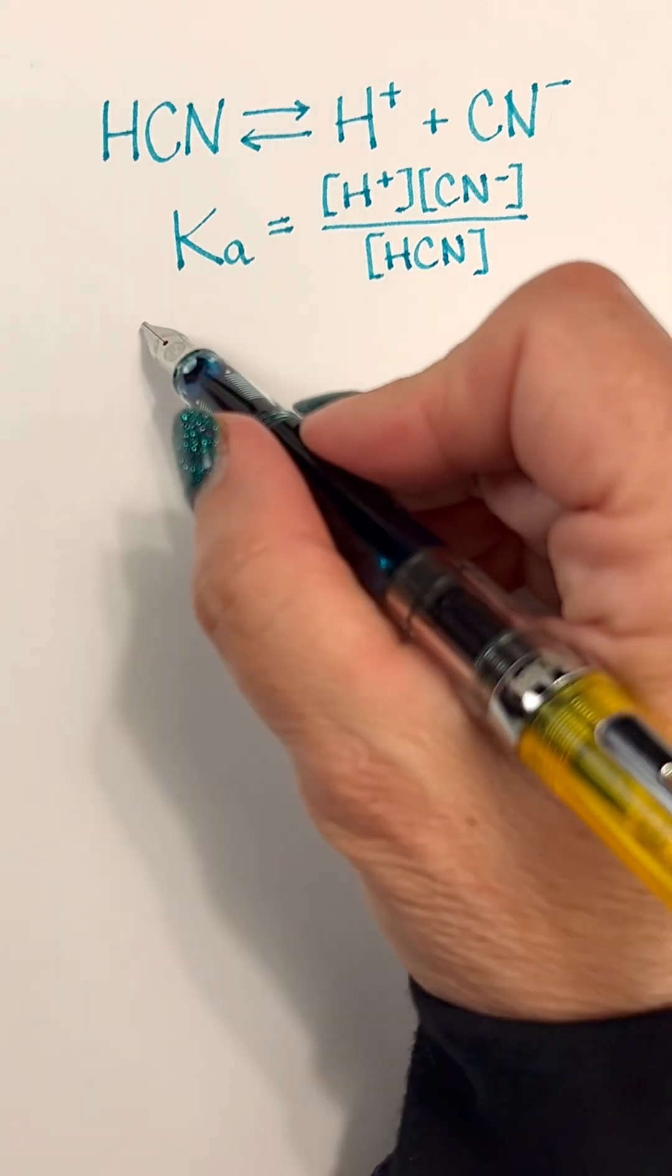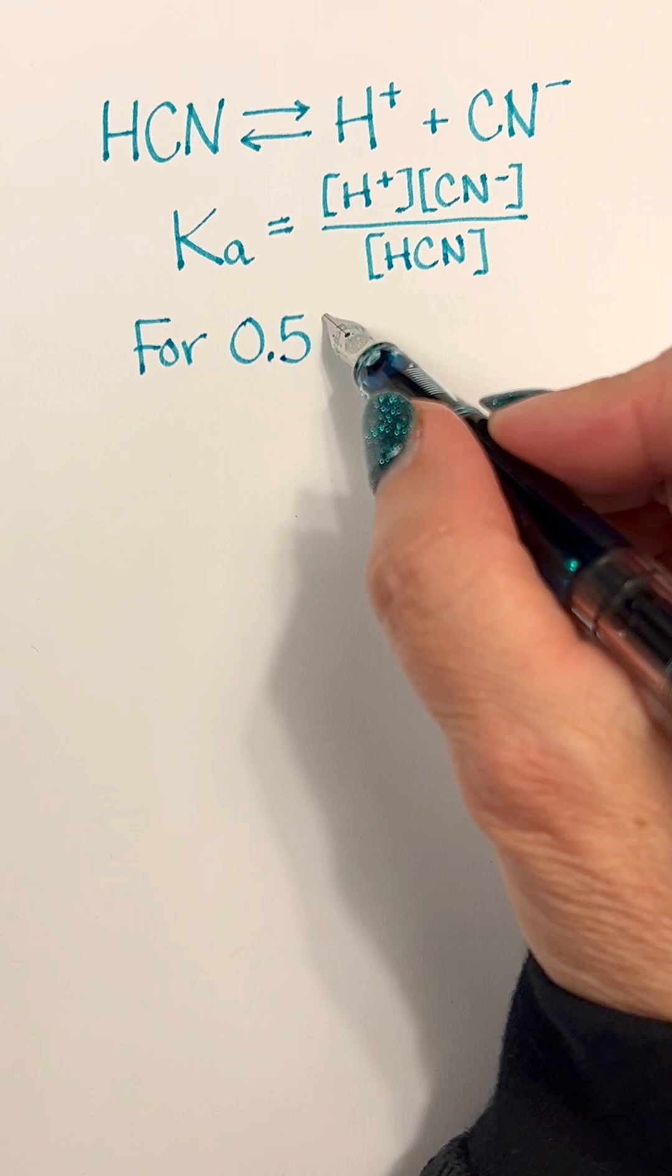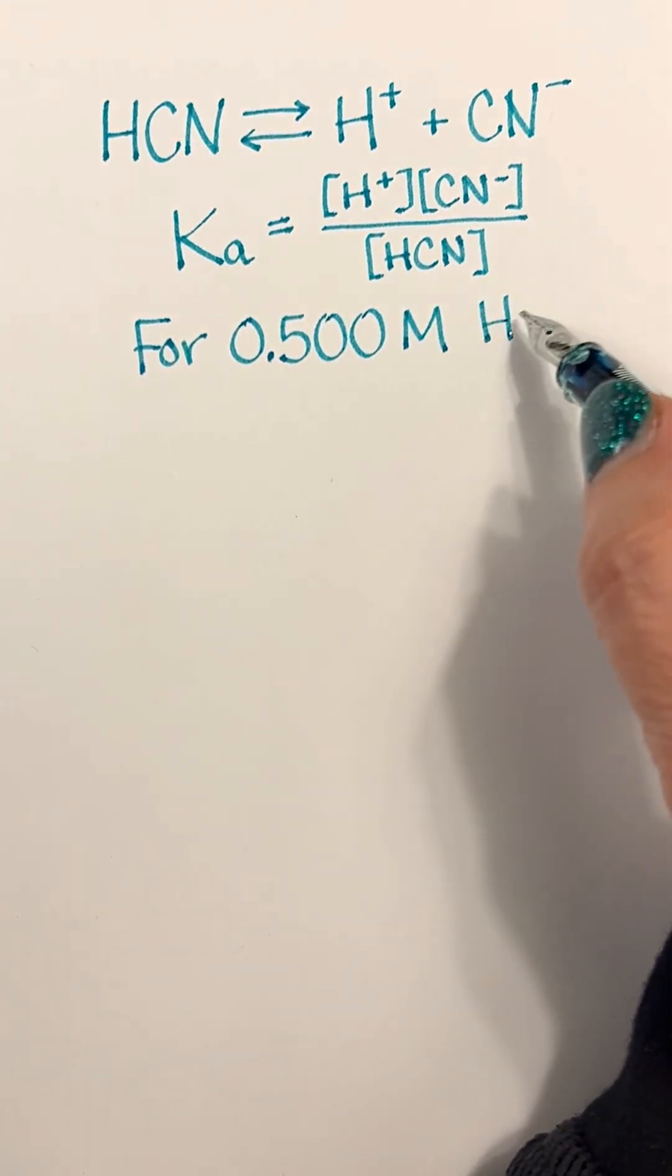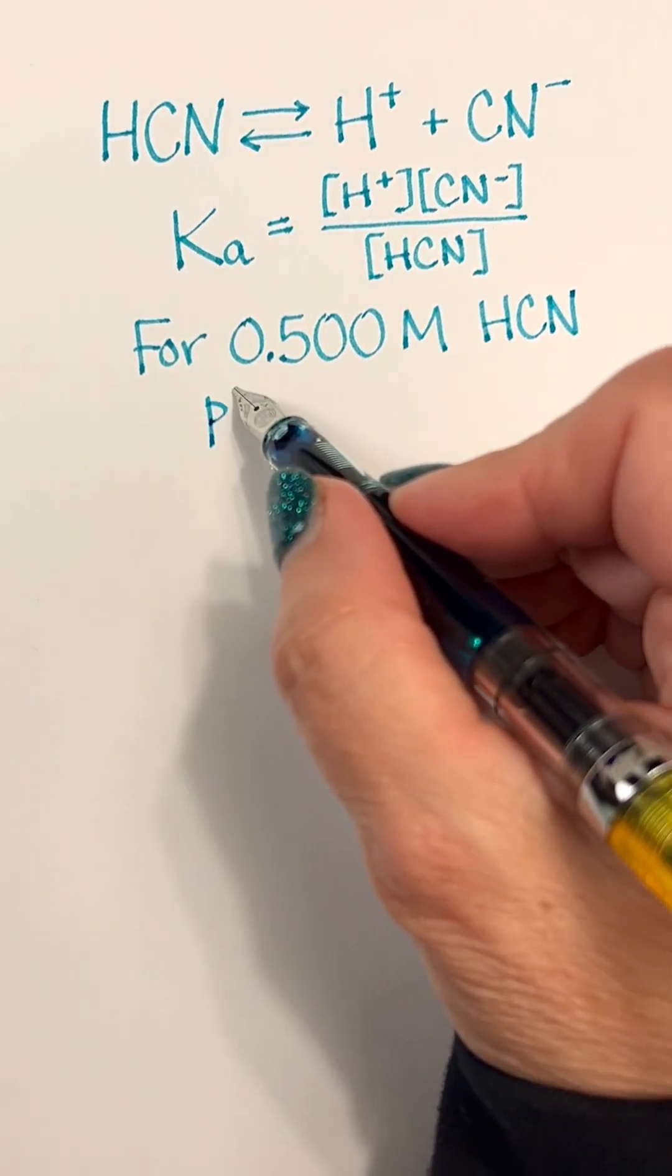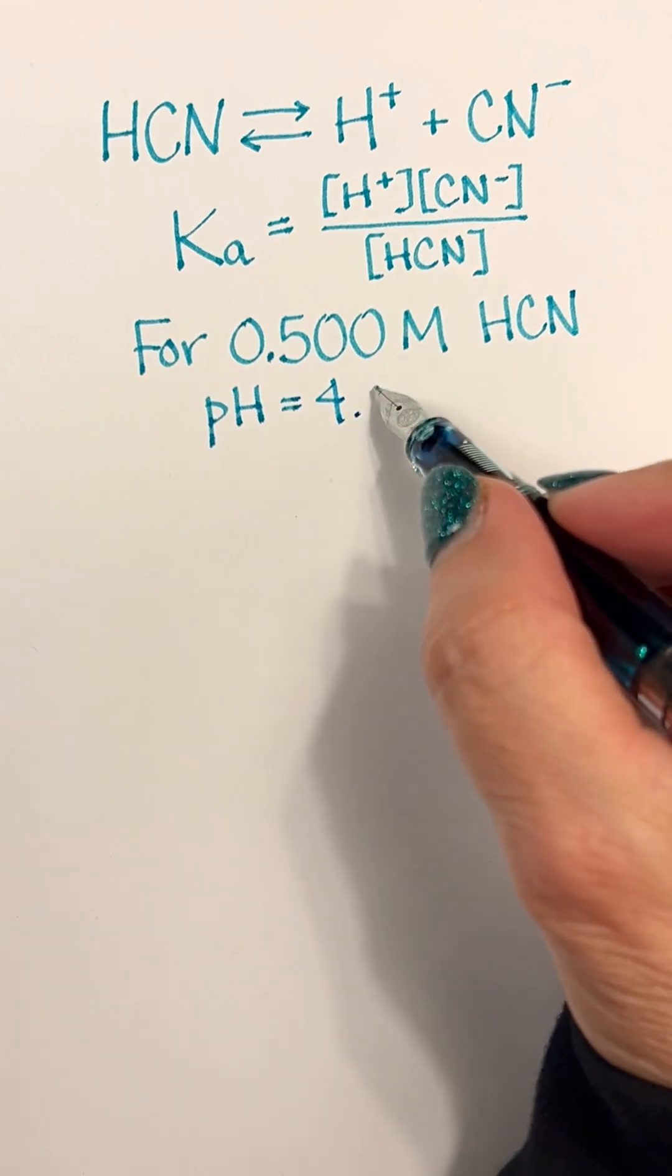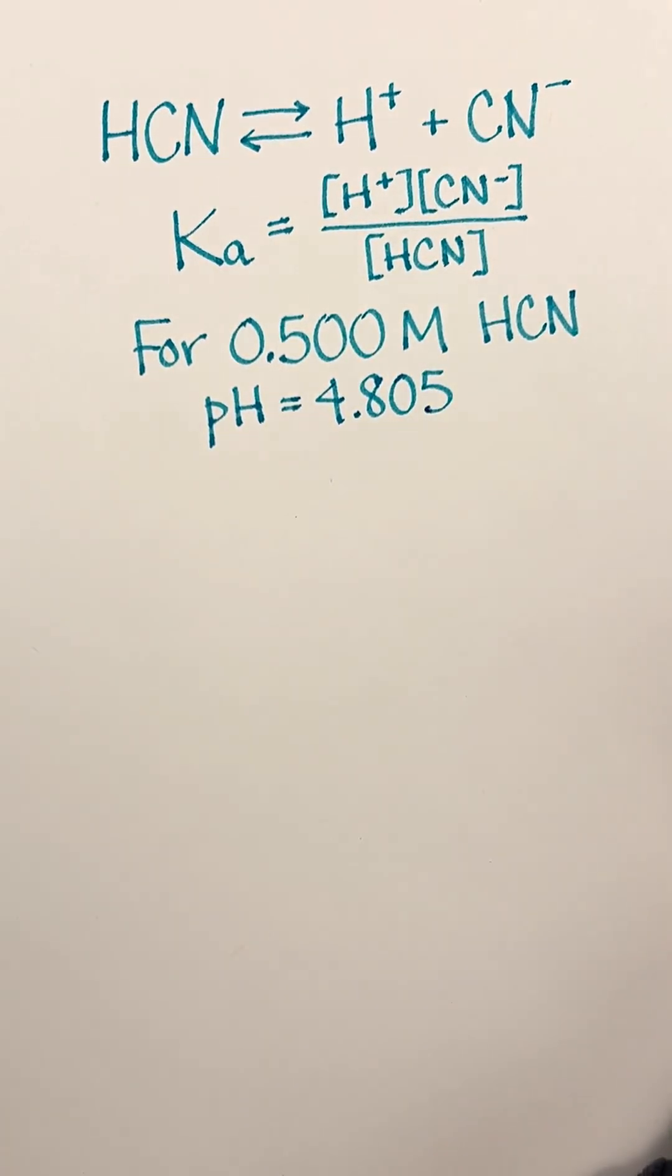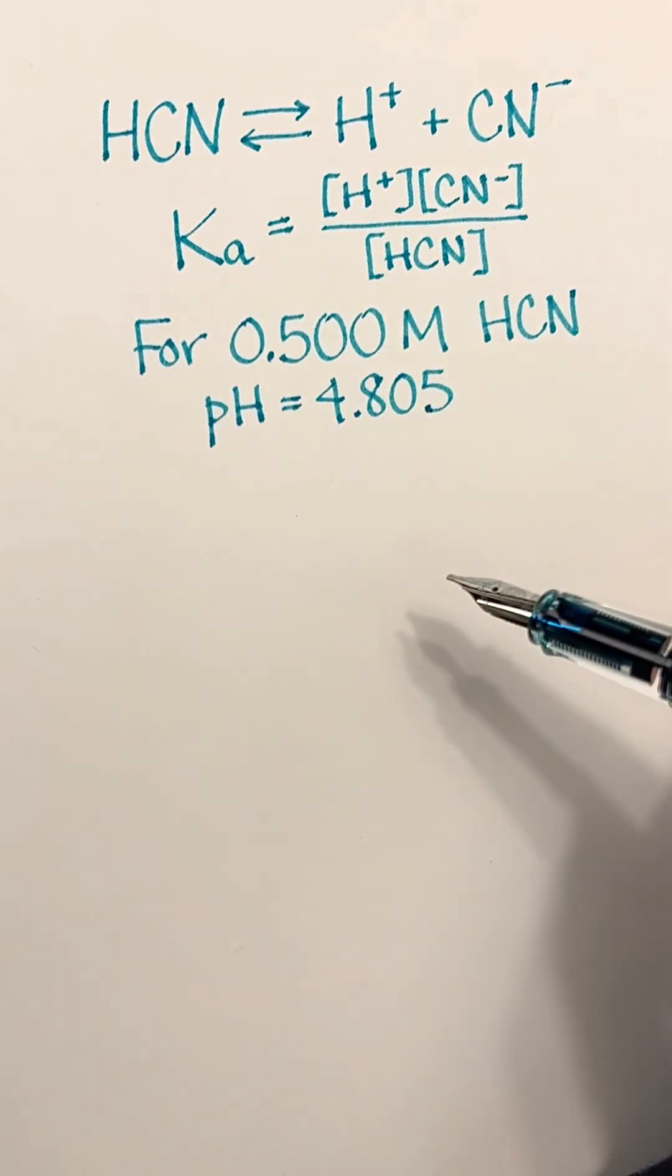Okay, so what if we had a 0.500 molar solution of HCN where the pH had been measured and it was known to be 4.805 from those measurements? We could actually find the value of Ka given this information.